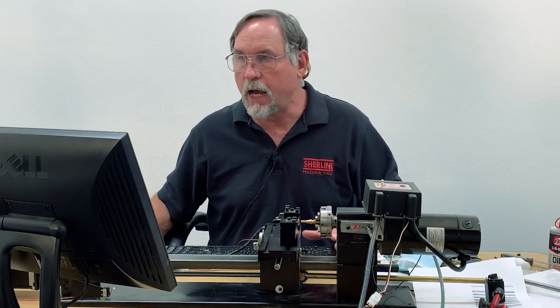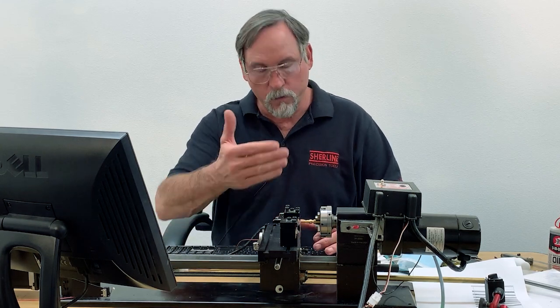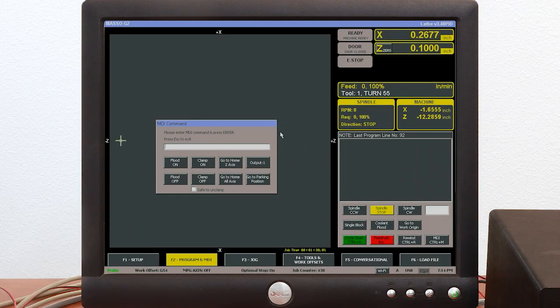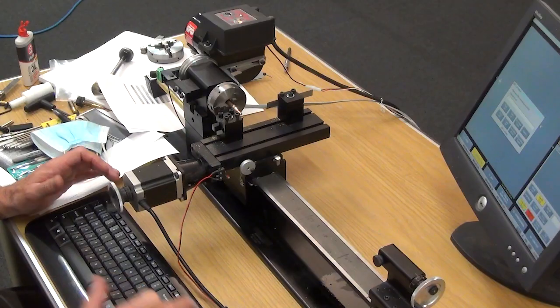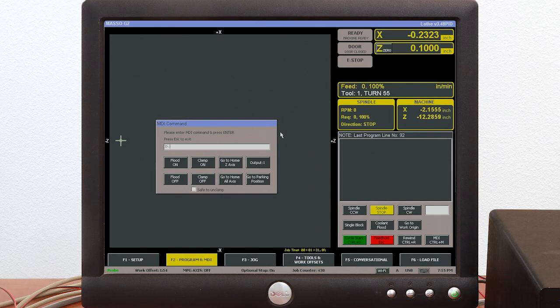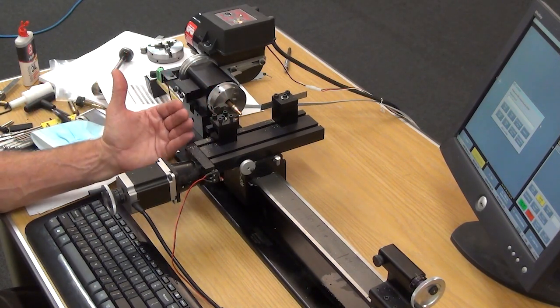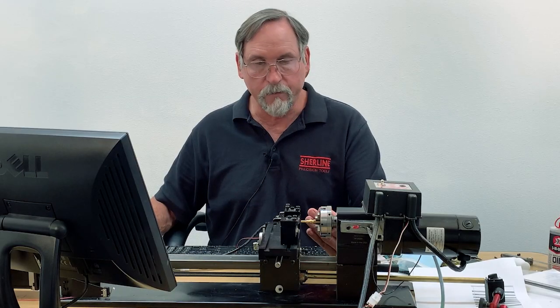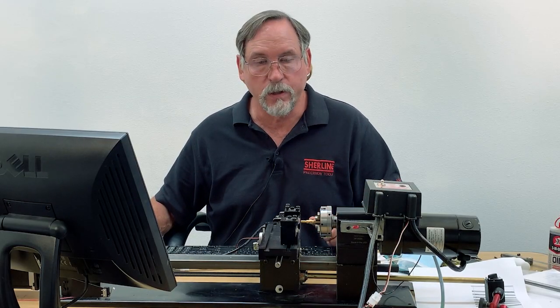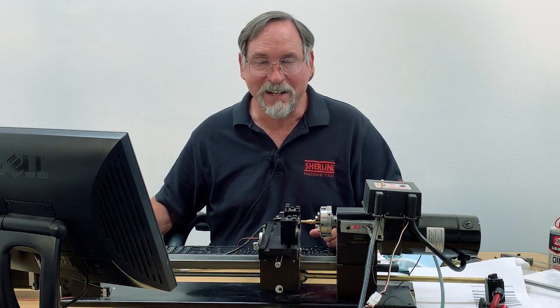And again, the G91 is just a distance and direction. If I want to move it back out for this tool, I'll go X minus 0.5, and that moves me back where I was. If I go another X minus 0.5, again, it's just making incremental moves of 0.5 in the minus direction. So I hope that explains it to you.